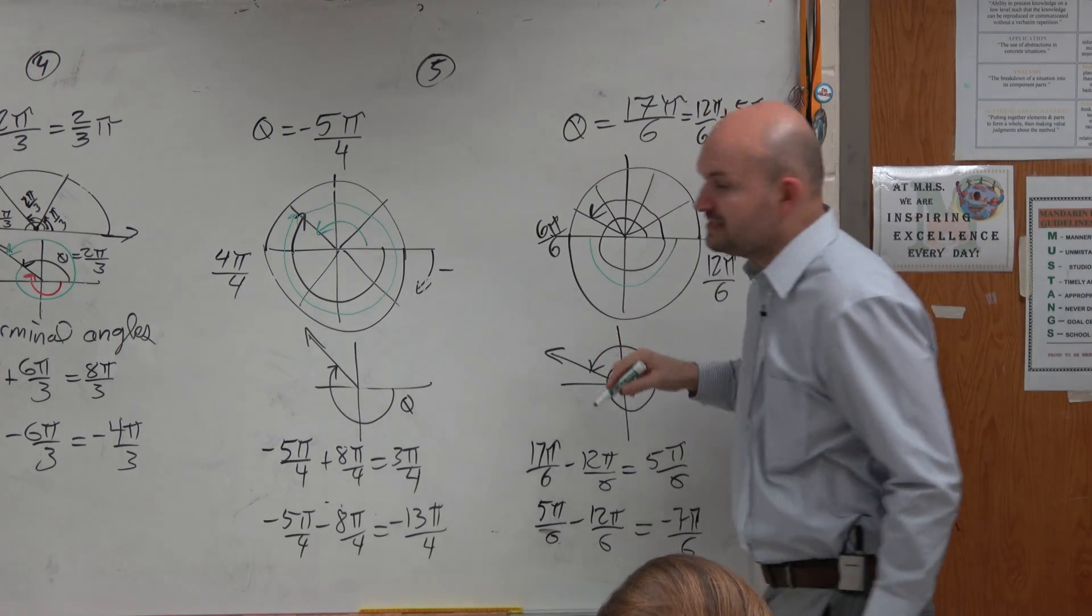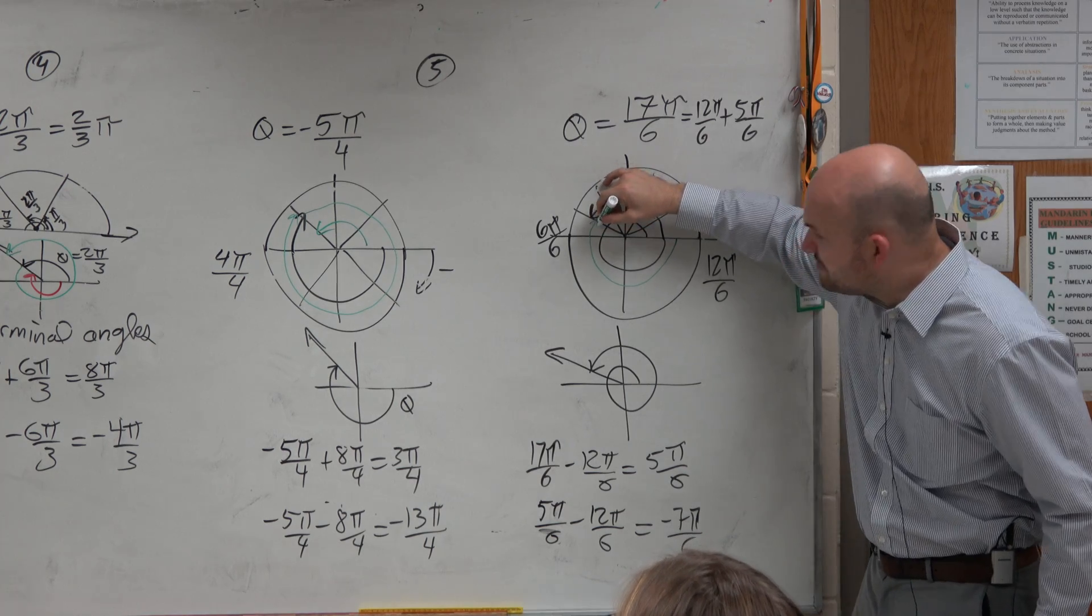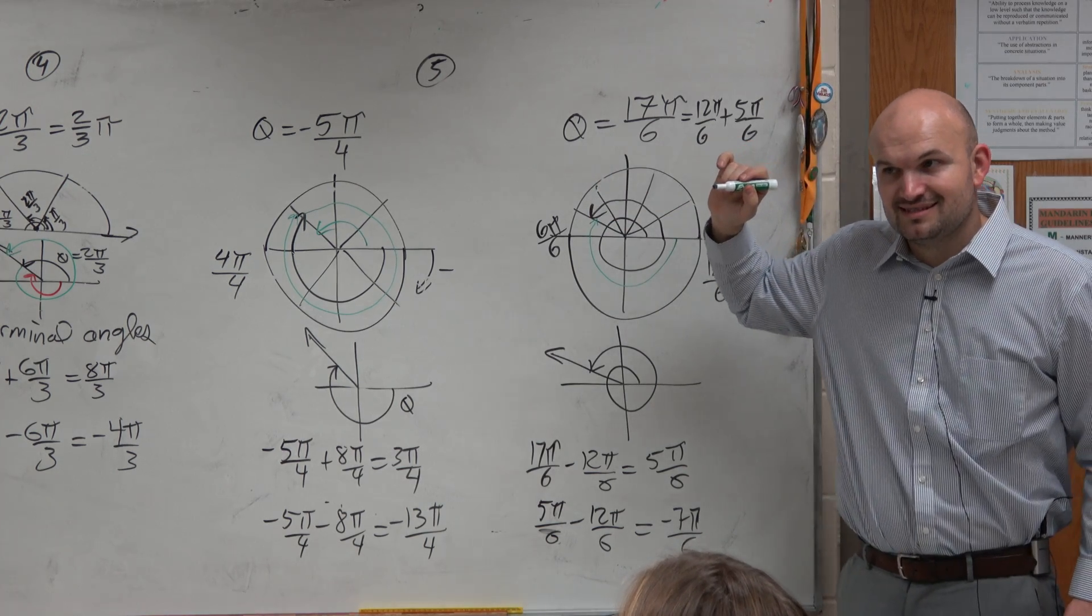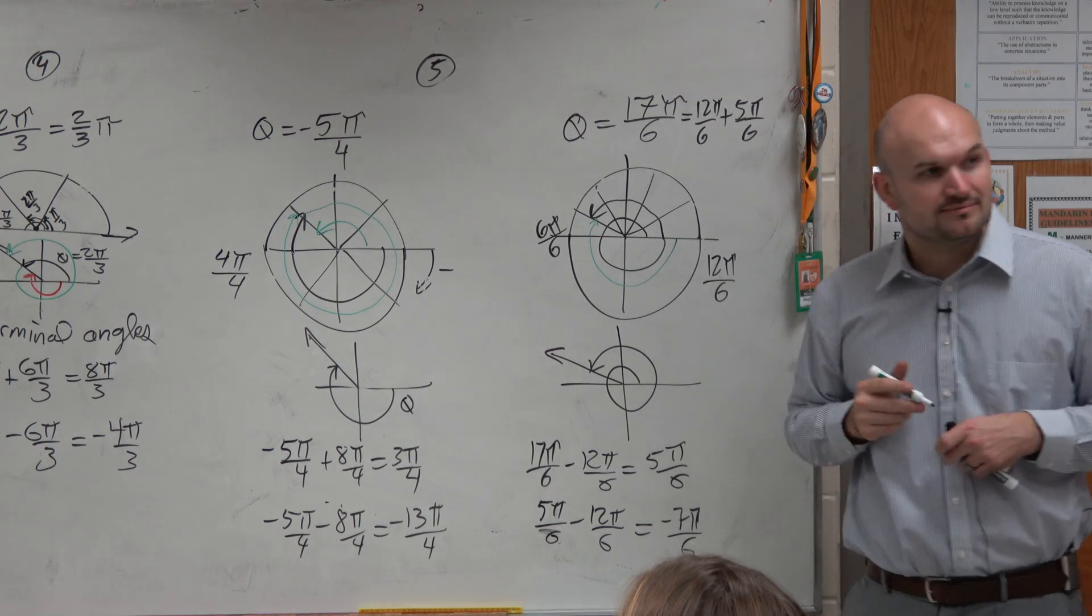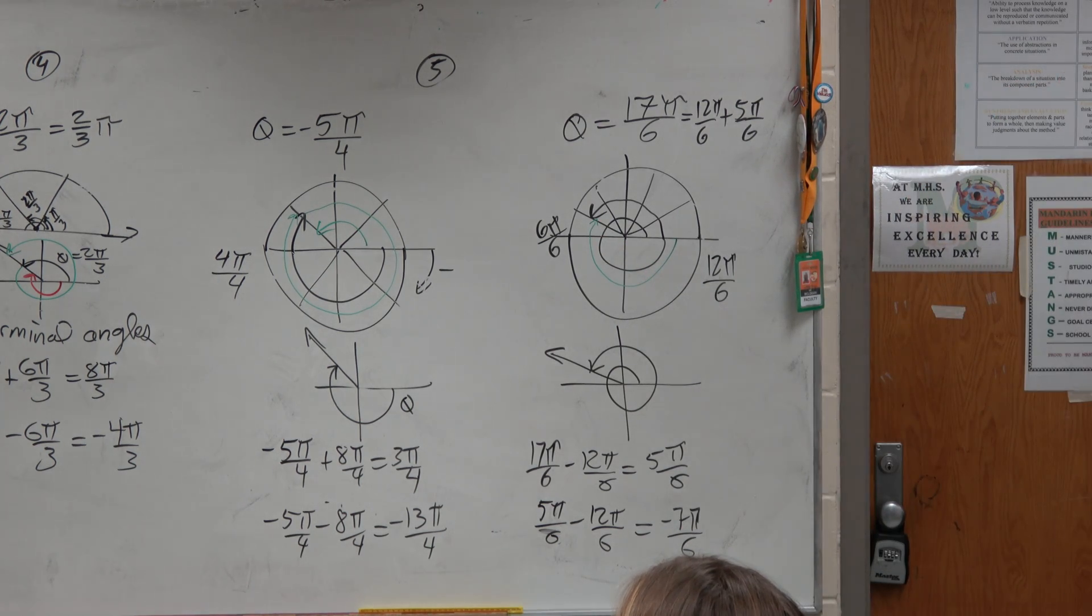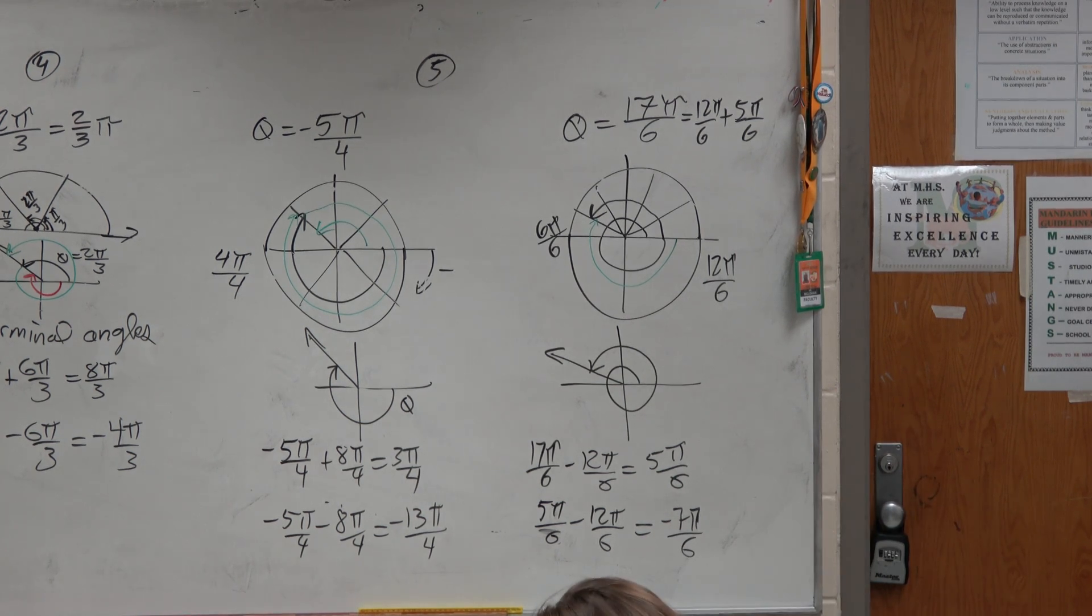From here to here would be 6π over 6. And then if I just went a little bit extra, that would be 7π over 6 in the negative direction. So we're good. Anybody have any questions on coterminal angles? Hence the word co.